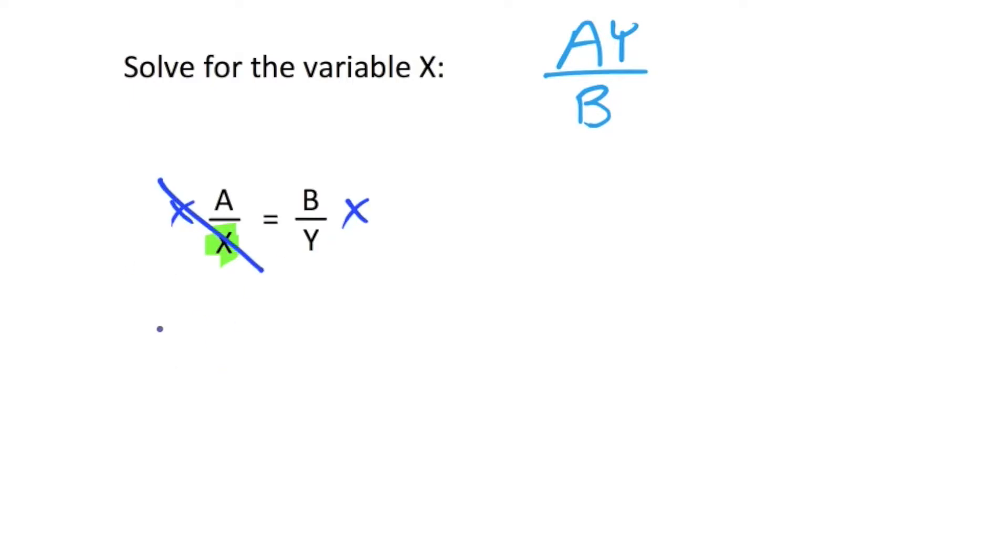The x is cancelled out, so on the left side of the equation we're left with a, that's going to equal b times x, which we can write as bx, over y.